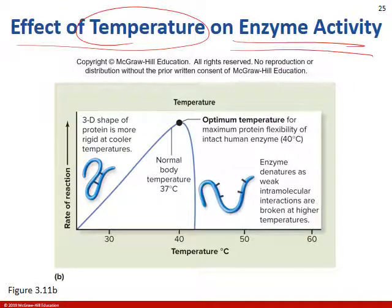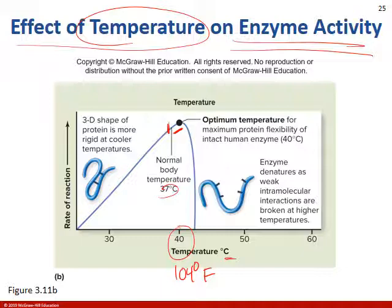Temperature affects enzyme activity. This chart is in Celsius — 40°C is about 104°F. Normal body temperature is 98.6°F. A slight fever is okay and actually increases enzyme activity, which helps fight infection by producing more white blood cells. Once you get over 104–105°F, you start breaking down your own enzymes — the ones doing good work like creating ATP. They denature: the temperature causes the enzyme to break apart and stop functioning.